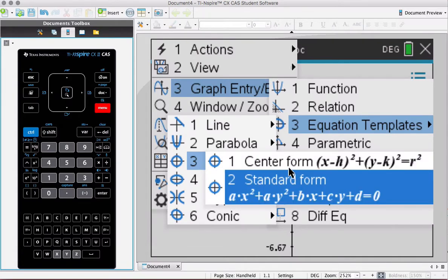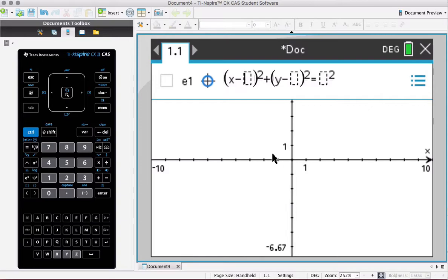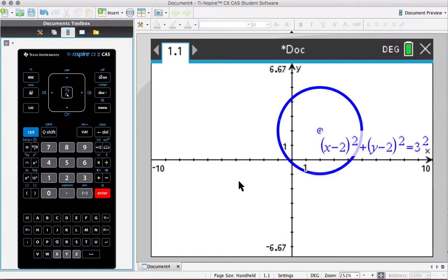You'll almost always use your center form unless a question really necessitates you use the standard form. I come over here, I can put in what my center values will be, let's have a circle situated 2, 2 and have a radius of 3. Then I go enter and it draws me my circle.